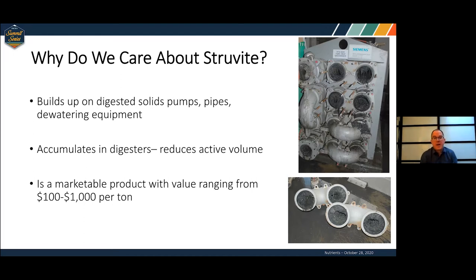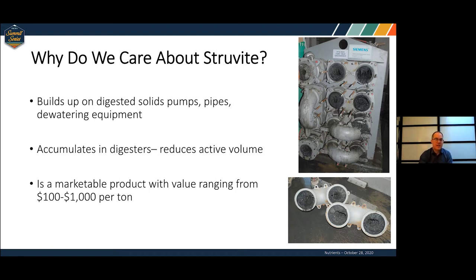What does struvite do and why do we care? It just builds up — in pipes, on pumps. You can see pictures of a heat exchanger completely clogged. It can accumulate in digesters. You may think you have a million gallons of digester, but actually only 750,000 gallons because the rest is all struvite — it can really reduce your active volume. On the other hand, struvite could actually be a valuable resource, since the nutrients are good for fertilizer. Depending on the form, you can market it for $1,000 to $2,000 per ton.